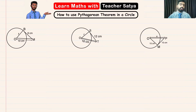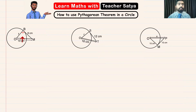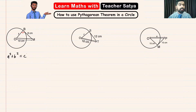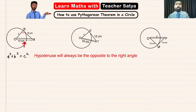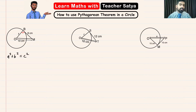In this question, BM is the tangent and BO is the radius, therefore this angle right here will be a right angle. The Pythagorean theorem states that a² + b² = c², where c is the hypotenuse, and the hypotenuse is always opposite to the right angle. In this case, the side opposite to the right angle will be side OM.